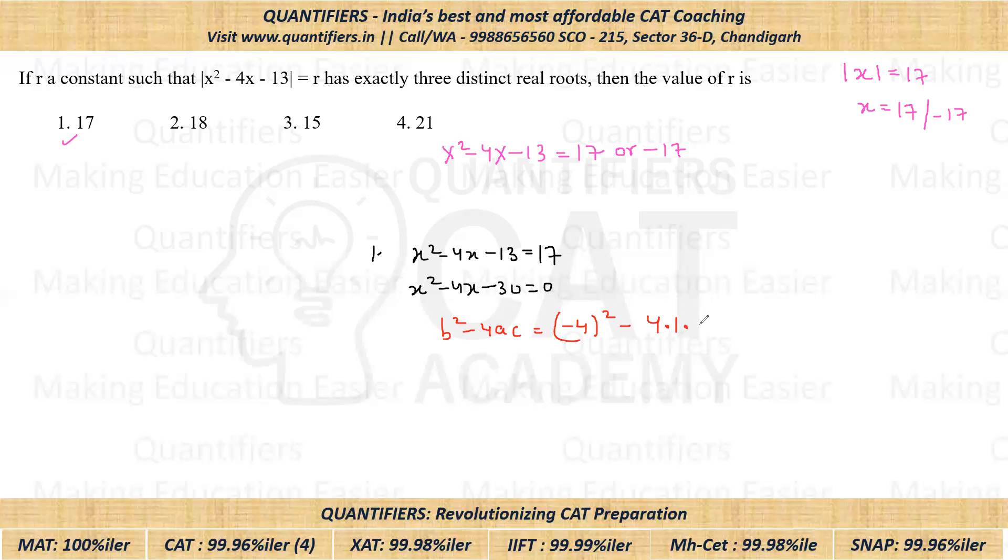Now if we solve it, we'll get 16, and minus and minus will become plus, which is plus 120. So this will give us 136. Now if we have b² - 4ac value greater than 0, what do we say? That definitely it will be having two distinct real roots.